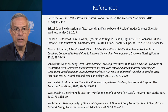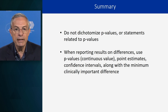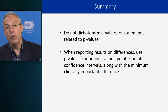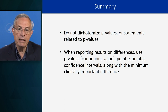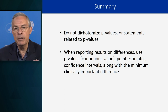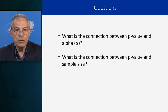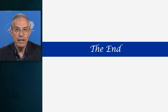Here are the references for this segment. In summary: do not dichotomize p-values or statements related to p-values. When reporting results on differences, use p-values as continuous values, point estimates, confidence intervals — lower and upper limits — along with the minimum clinically important difference. That's where the thoughtfulness comes in. The minimum clinically important difference is not a statistical question; it is a clinical question. My questions to you are: what is the connection between p-value and alpha, and what is the connection between p-value and sample size? Thank you for watching.